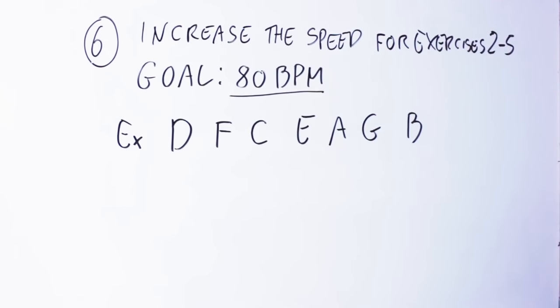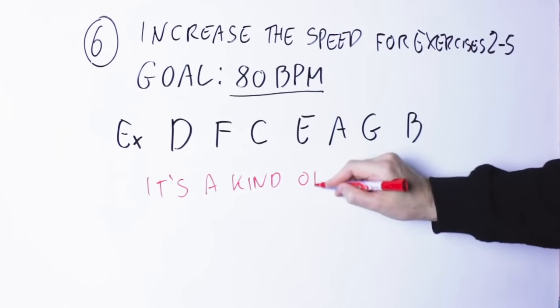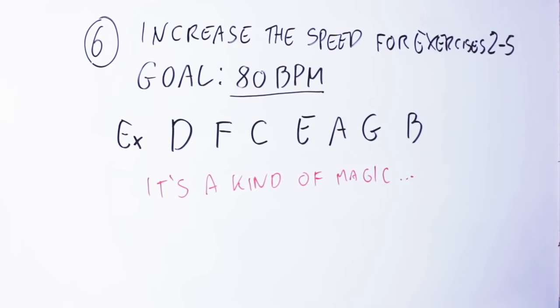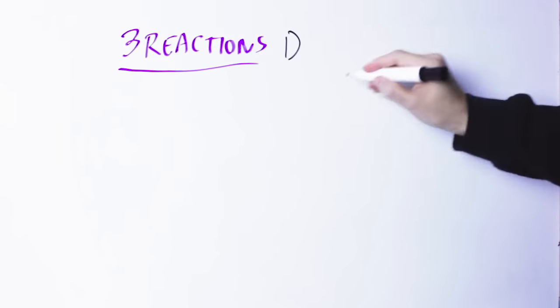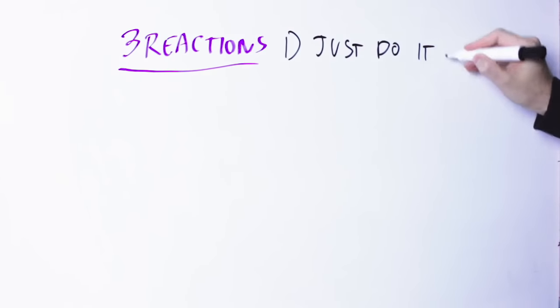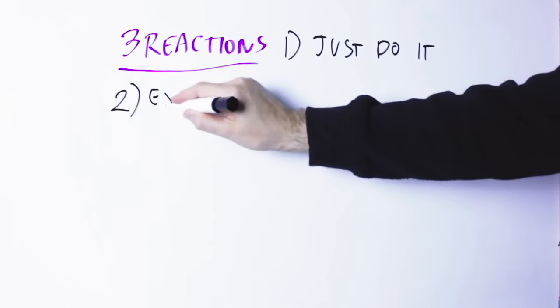In my experience, when you can play exercise five at 80 beats per minute, then you're done. You know your notes. You just know where they are. It's kind of magic. If you want to just look at your fretboard and you know where the notes are. Now I've seen three different kinds of reaction to these exercises. The first one is the best one: you just see the exercises, sit down, do the exercises, get better. That's great. If this is your reaction, kudos to you. You're going to learn all the notes on your fretboard.